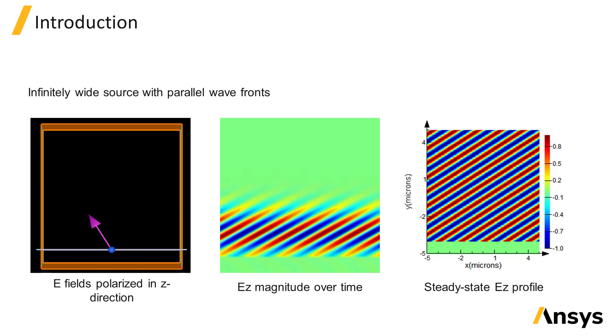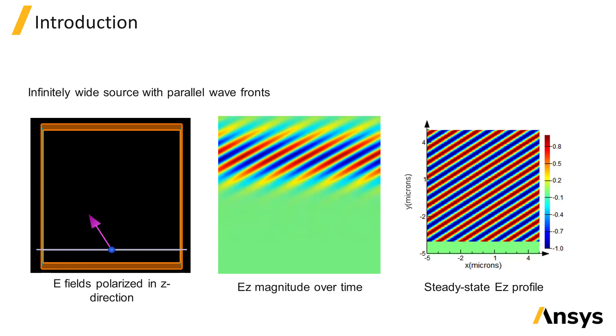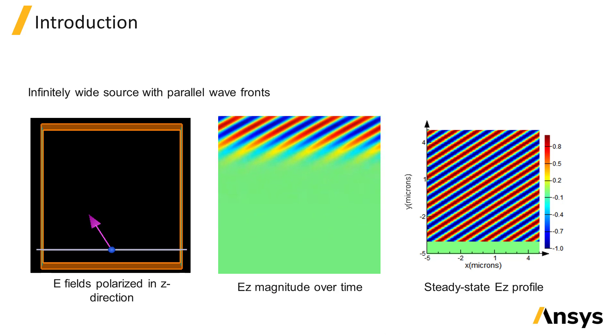Plane waves can be injected at a specified angle, and this movie shows a plane wave source pulse traveling in free space at an angle. The movie is showing the real part of the z component of the electric fields so we can clearly see the angled wave fronts.